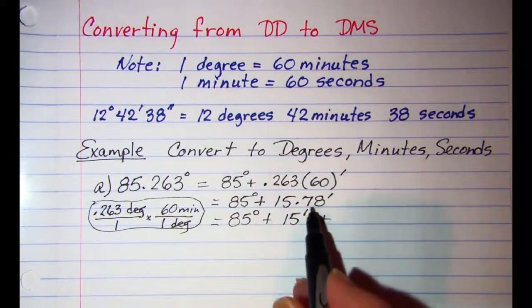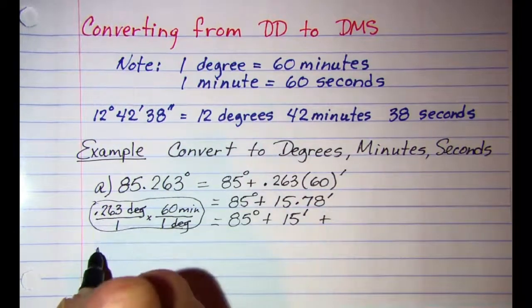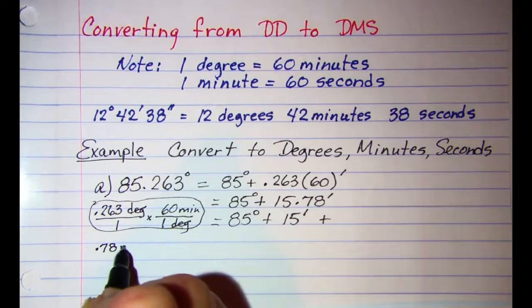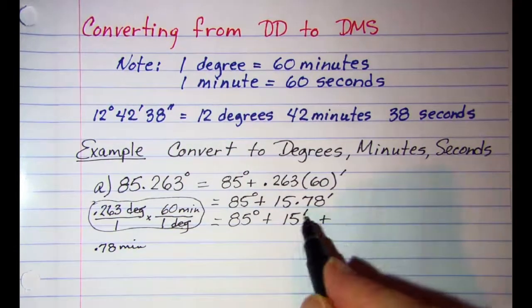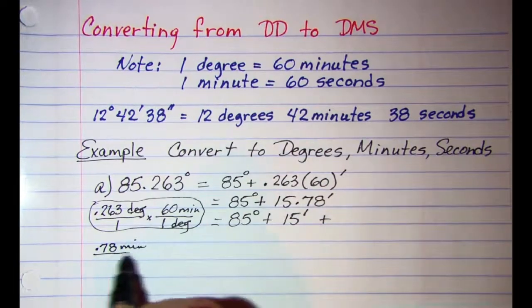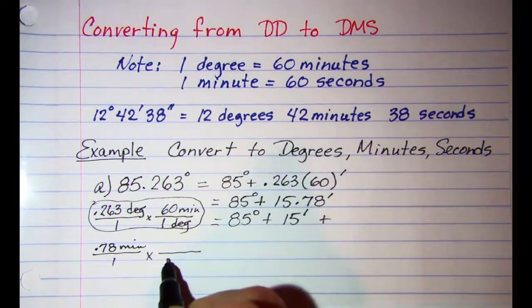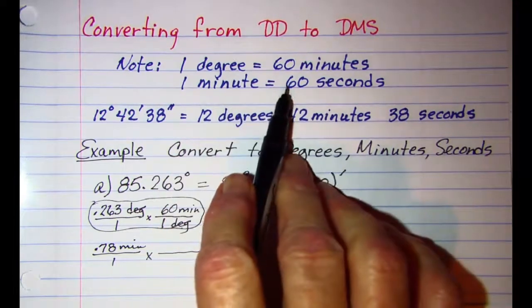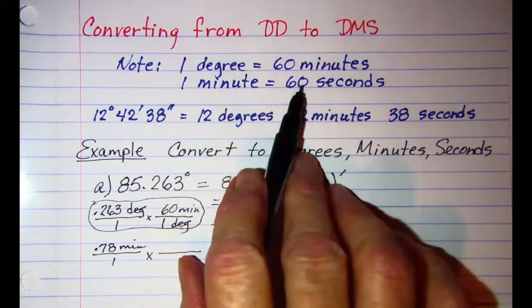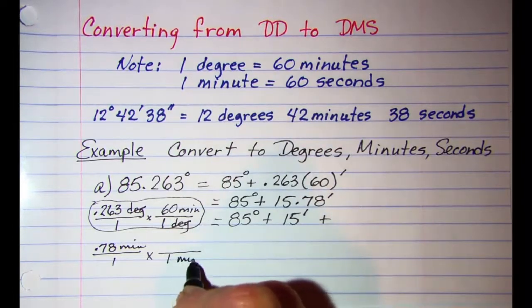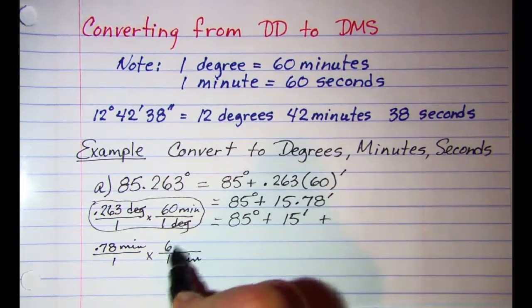0.78 of a minute, is what I have right here, and I want to convert that to the next smaller unit. I know that 1 minute is 60 seconds.